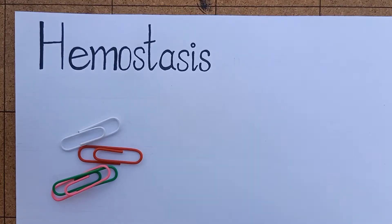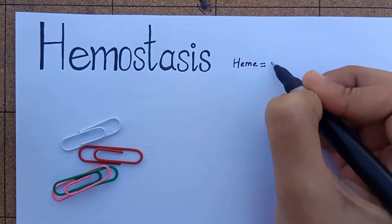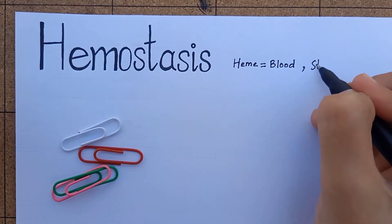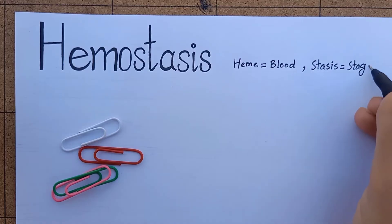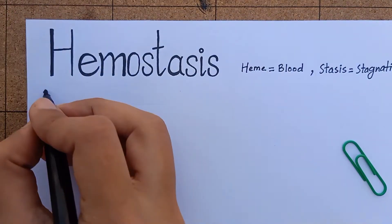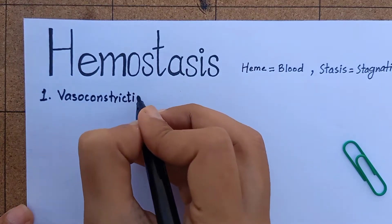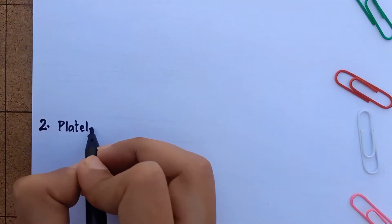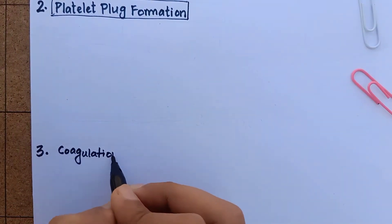We are going to learn hemostasis. The term hemostasis means prevention of blood loss, as it is made up of two Greek words — heme means blood and stasis means stagnation. Hemostasis can be divided into three major stages: first is vasoconstriction, then comes platelet plug formation, and the final is coagulation.